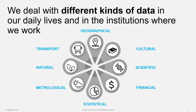A common ingredient in almost all decisions is having some kind of data, and we deal with all different kinds of data in our daily lives and in the institutions where we work. We deal with geographical data describing the characteristics of physical locations, cultural data about religions and different ethnic groups, scientific data from surveys, experiments, and clinical trials of new drugs, financial data from firms, banks, and our own bank accounts, meteorological data on the weather helping us predict climate and even global warming, data about nature and the environment tracking biodiversity, and transportation data about car flows, airplanes, and boat traffic.